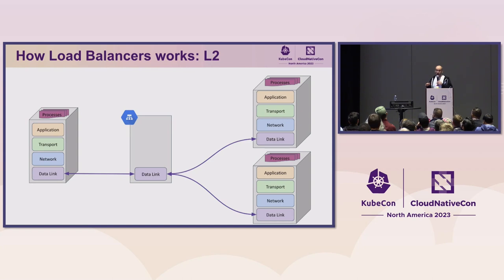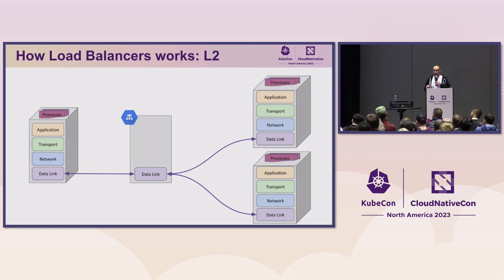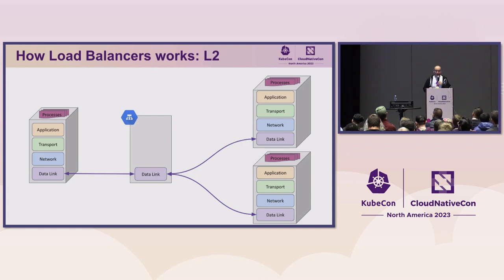If we have a load balancer at layer 2, the only information we have is the Ethernet MAC address. Typically this is implemented with MetalLB in L2 mode in Kubernetes, or with VRRP for an active-passive gateway. The problem with this mode is that it only works in a local broadcast domain, so it's very limited.